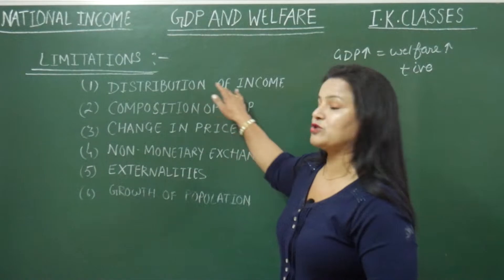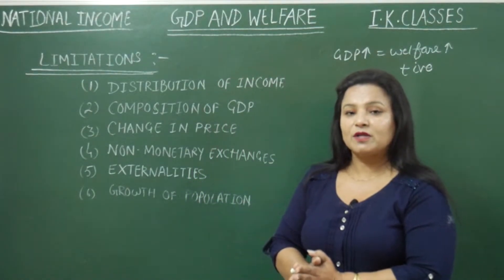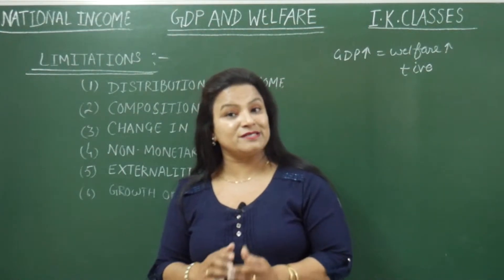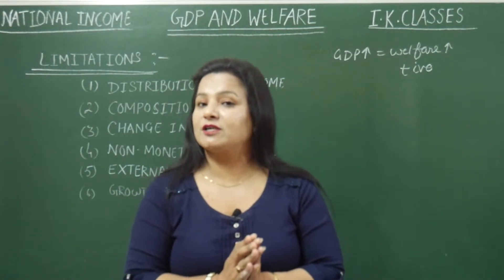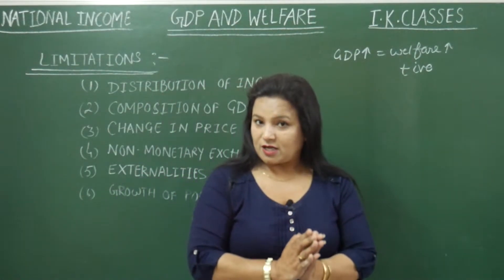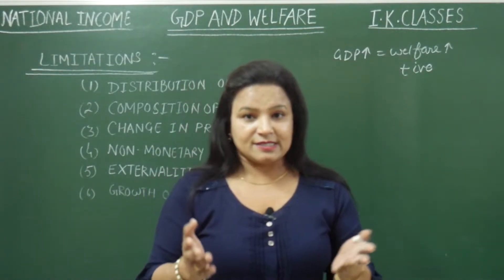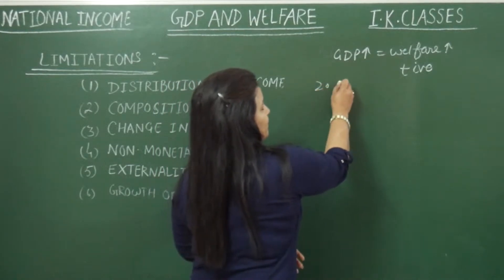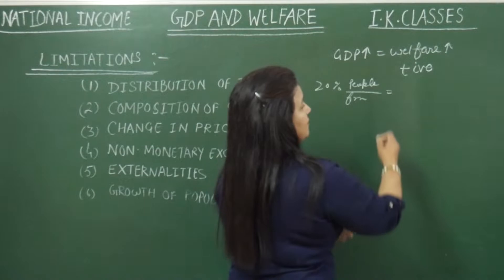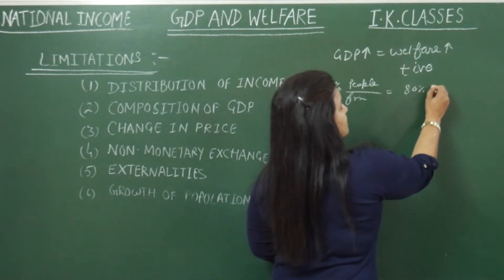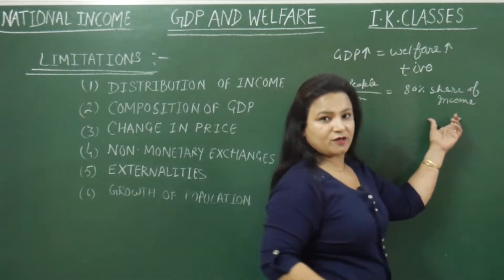The first limitation is unequal distribution of income. When GDP rises, it means rise in income. But if the distribution of income is unequal, GDP growth fails to reflect a rise in social welfare. Unequal distribution means the richer are becoming more richer and the poor are becoming more poorer — the gap is widening. For example, suppose 20 percent of people are getting 80 percent share of GDP or income.